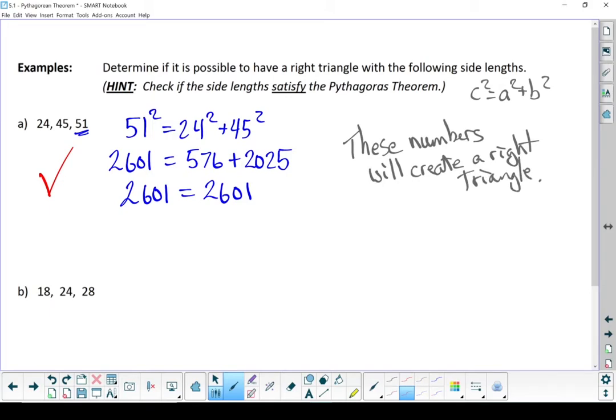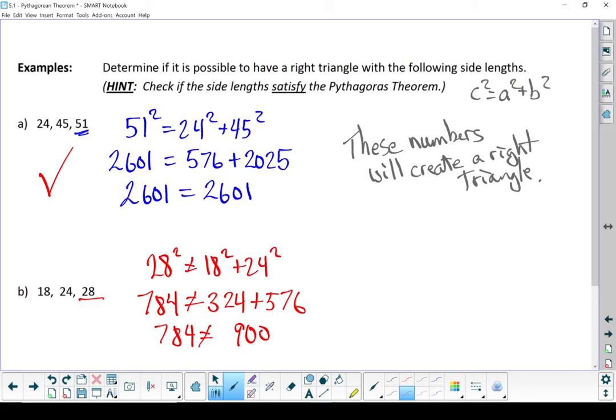Let's try with the next set. Longest side is 28. Uh-oh. That one is not a Pythagorean Triple. These numbers, while they will make a triangle, they will not create a right triangle.